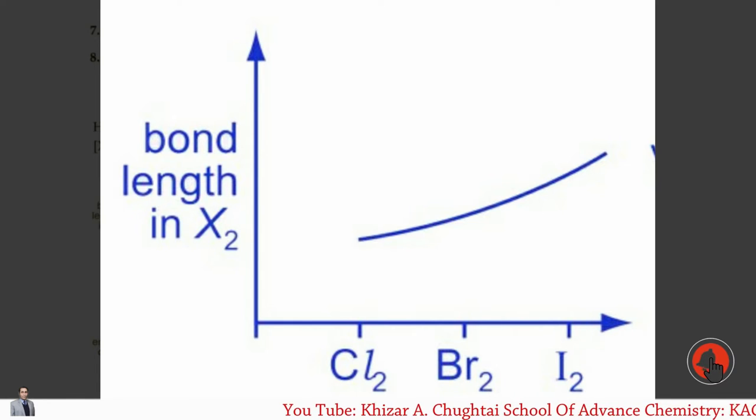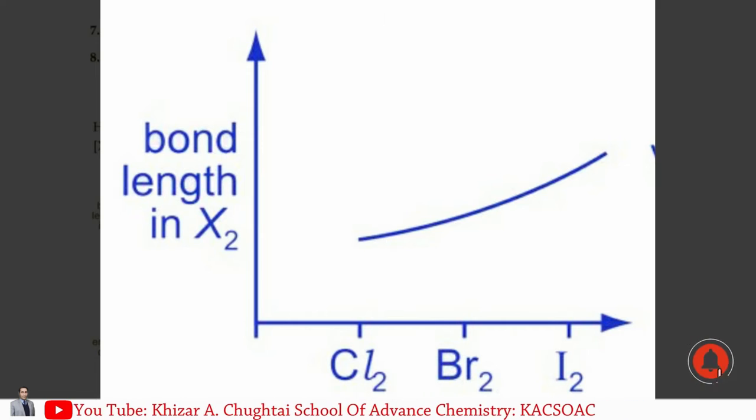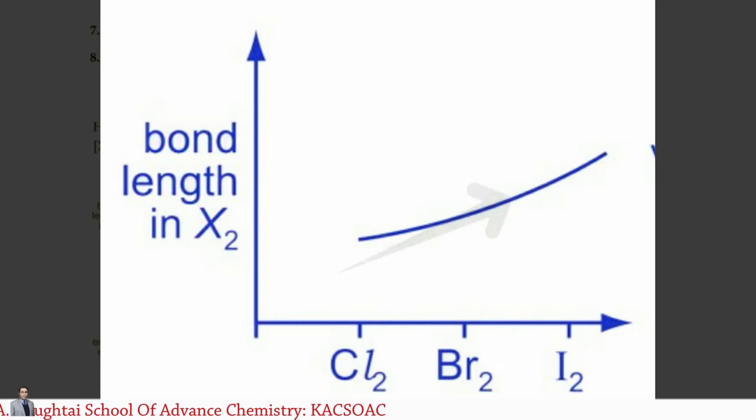As we move from Cl2 to Br2 and Br2 to I2, the size of molecule increases, size of the atoms also increases. So as a result, bond length between two atoms increases.